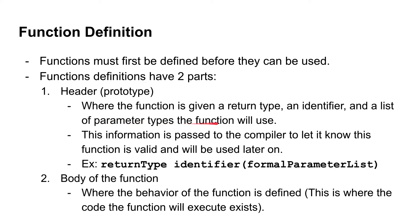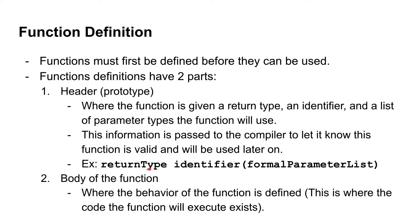We will go into parameter types in depth in a further video. This information that the header provides is given to the compiler to let it know that this function is valid and will be used later on. So when the compiler sees you calling a function by some identifier with a list of parameters, it will know that is a valid function to use. The header includes a return type — which can be any data type we've discussed, except arrays — then an identifier and a list of formal parameters.